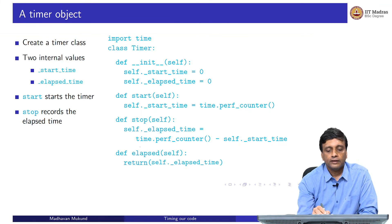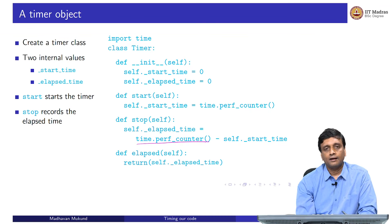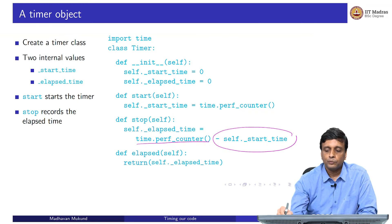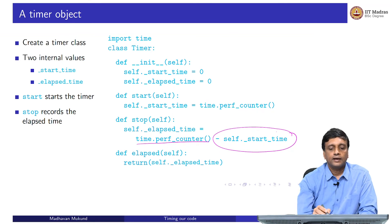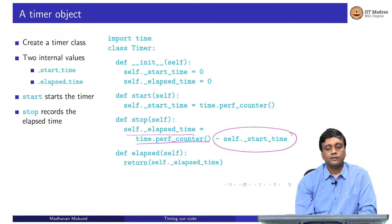When I say stop, I call this performance timer again, it is not important to me what that value is as such, I do not need to store it, what I want is the difference between that and the time that I started. And I will store that in this elapsed time thing. So, that when I call this function elapsed, I will get the elapsed time. This gives us a timer class, I will show you separately a more elaborate version of this and how to use this.